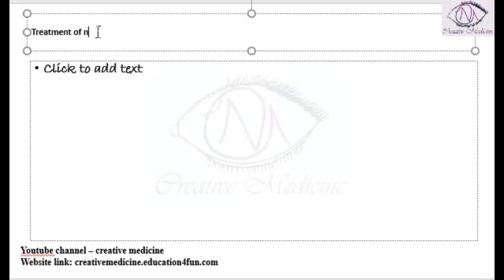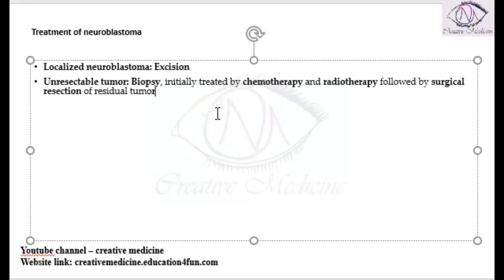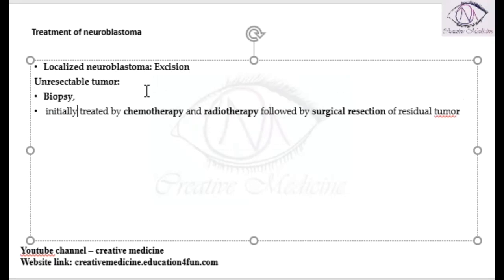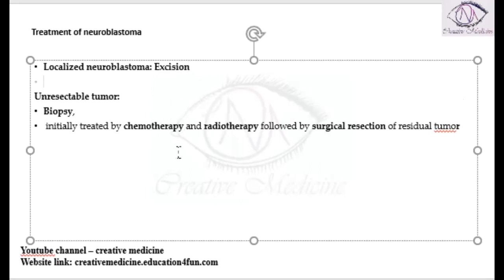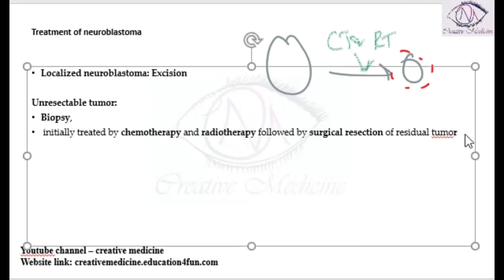In the treatment of neuroblastoma, if the neuroblastoma is localized and present to a certain area, then excision is done. If it is an unresectable tumor, then first a biopsy is done, followed by chemotherapy or radiotherapy, to reduce the size of the tumor from bigger to smaller. Then the residual tumor after chemotherapy and radiotherapy is excised.